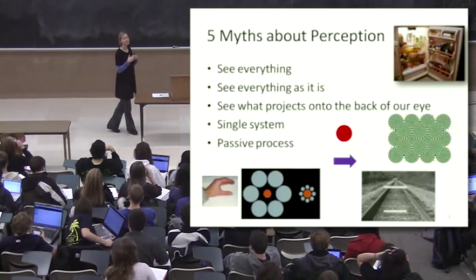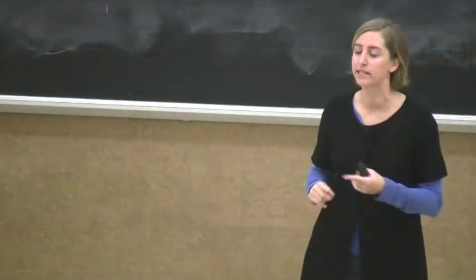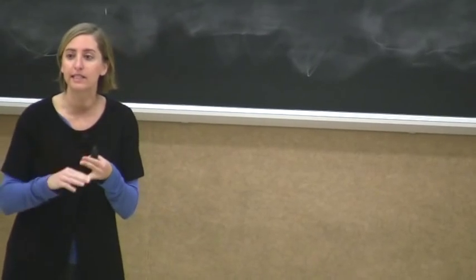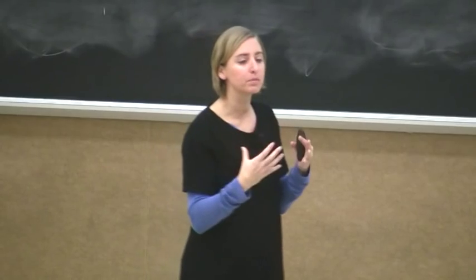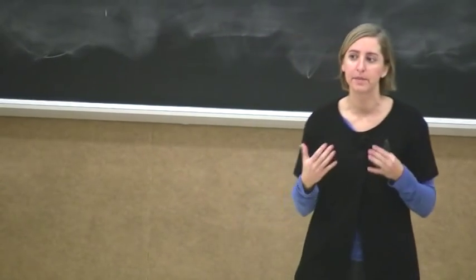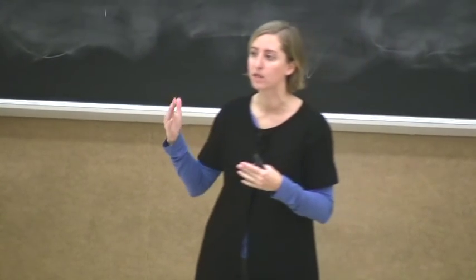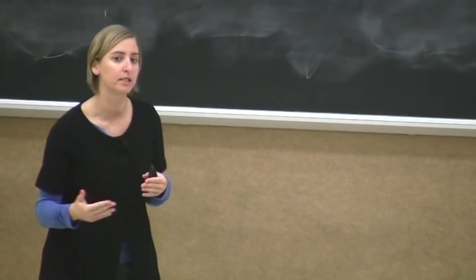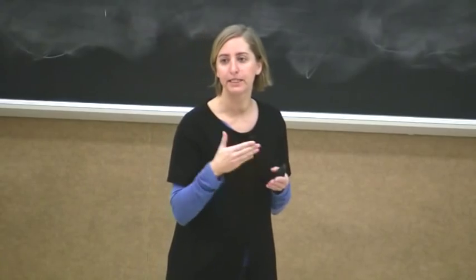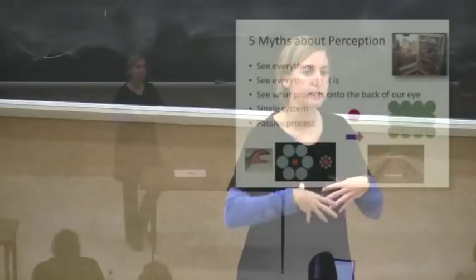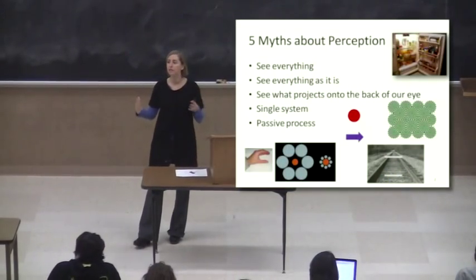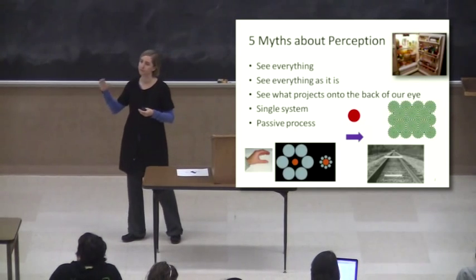That's just one example of multiple systems. We actually have a system for seeing in the dark and another system for seeing in the day. We talked about the M cells and the P cells. One of those is a system for seeing motion. So there are many examples of multiple systems in perception. These systems are parallel. They work together. Sometimes they share some of the same resources, but they're best thought of as separate systems. So perception is not one singular thing, but rather comprised of many different processes.